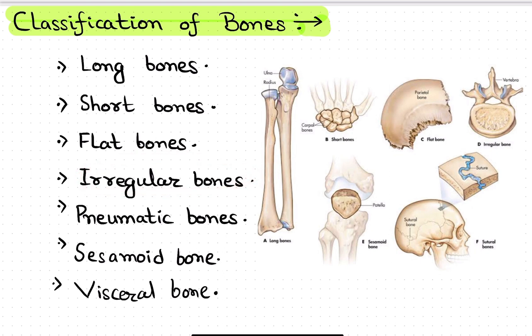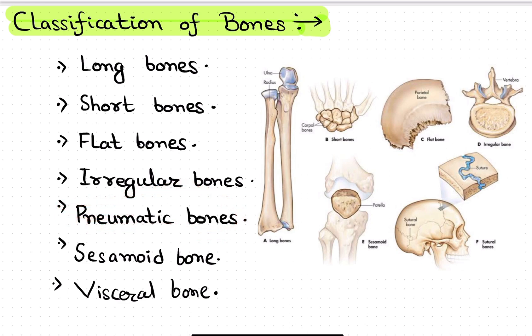Then we have irregular bones like os coxae — the hip bone. We also have pneumatic bones, which we will study in detail, but these are bones present mainly in birds so that they can fly easily. Then we have sesamoid bones, as shown here.